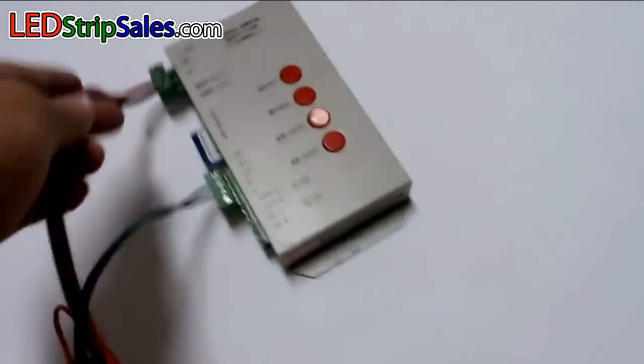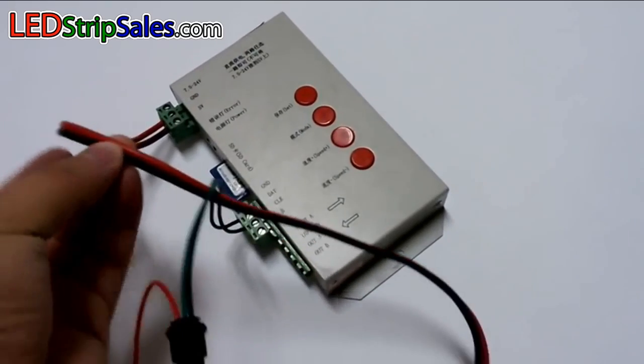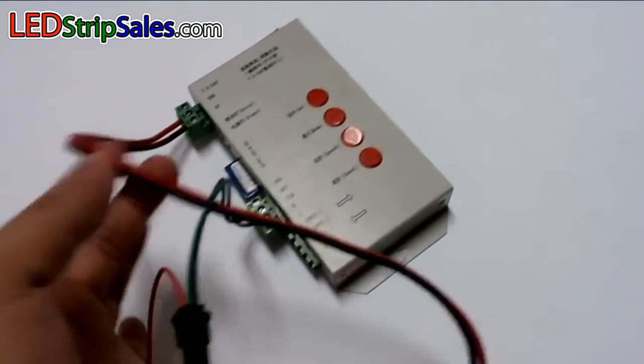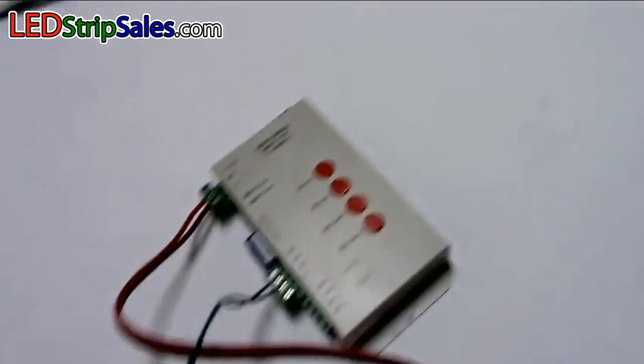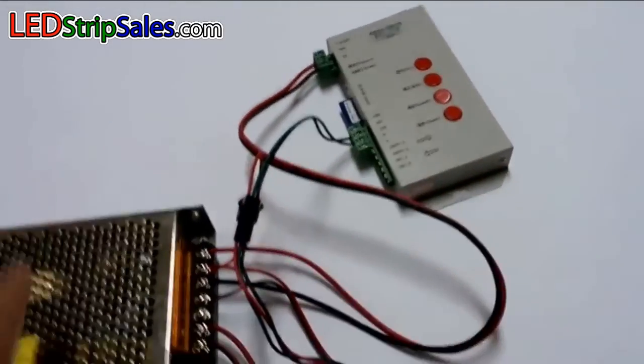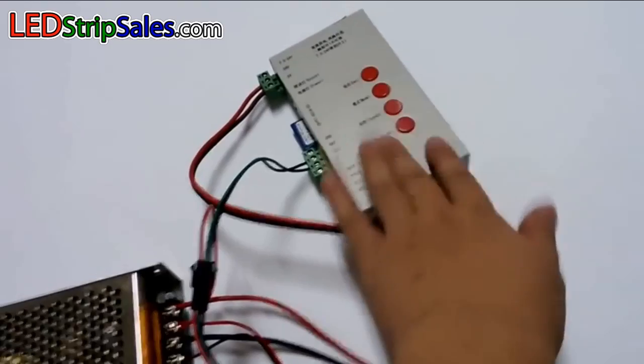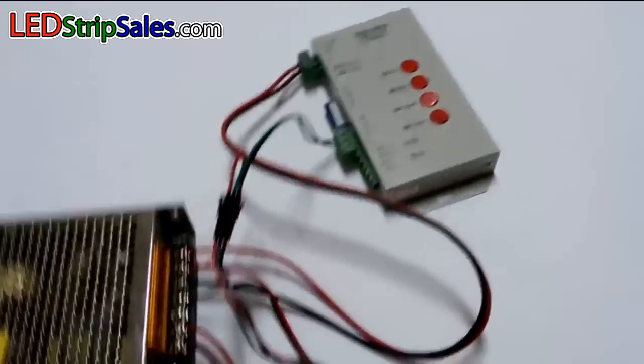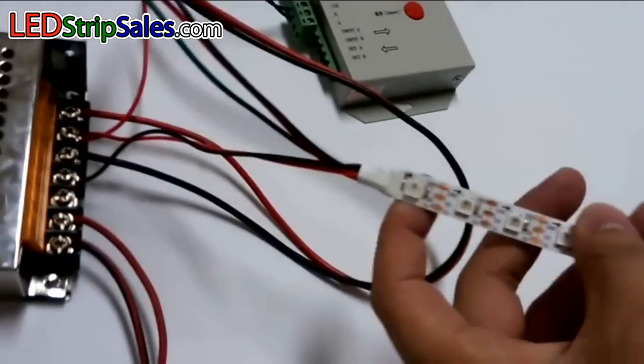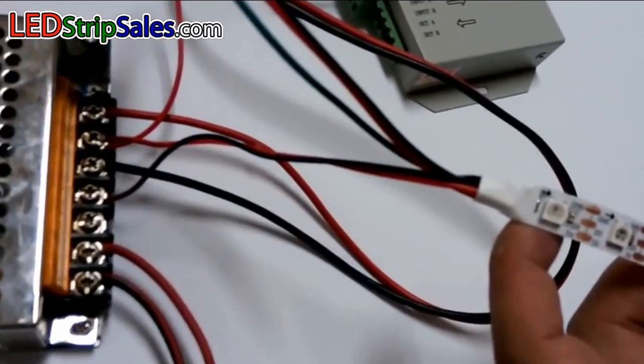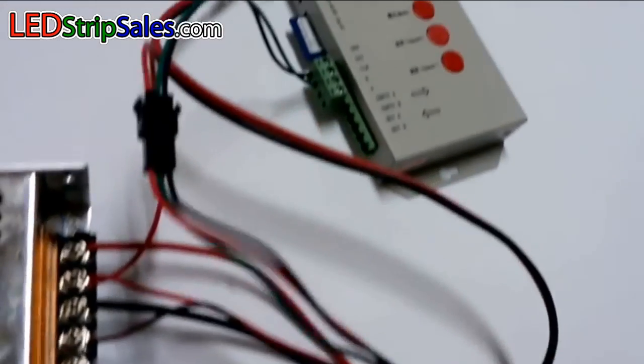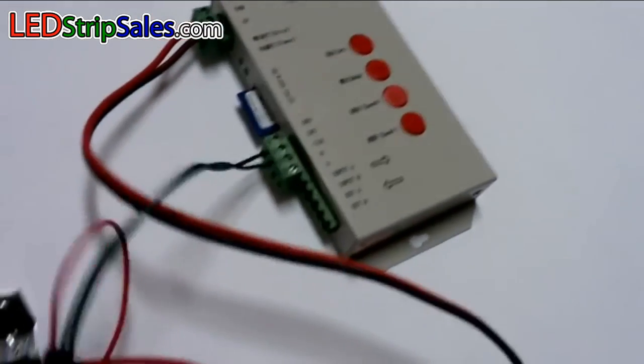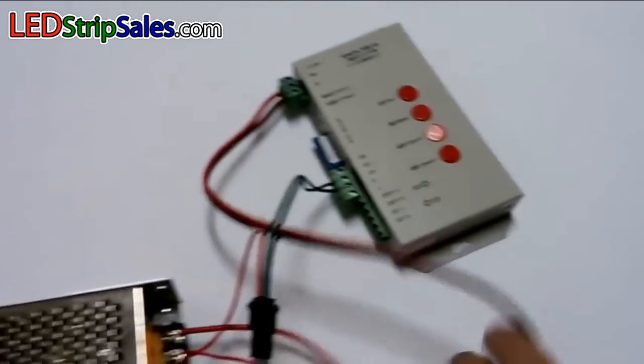Then here is the red wire - this red wire is the controller connected to power supply. The power supply gives the power to the controller. Okay, see that? You see it's very easy.